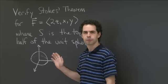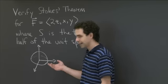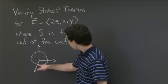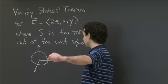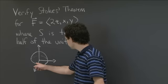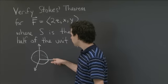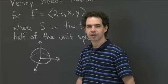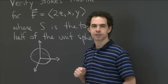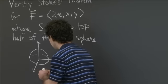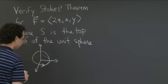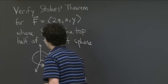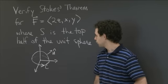Before we start, we should say one brief thing about compatible orientation. I didn't give you any orientations, but it doesn't matter as long as you choose ones that are compatible. If you imagine yourself walking along this boundary circle with your left hand out over that sphere, you'll be walking counterclockwise when your head is sticking out of the sphere. So the outward orientation on the sphere is compatible with the counterclockwise orientation on the boundary circle. Let's call the circle C, and our surface S.